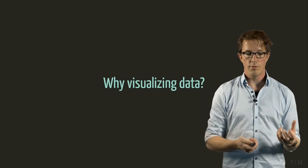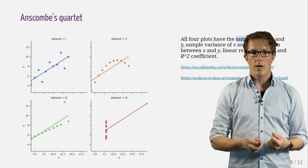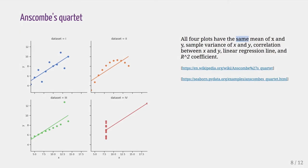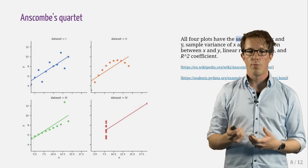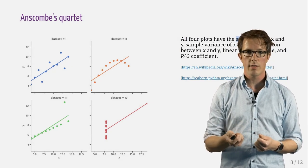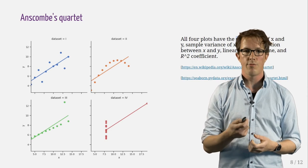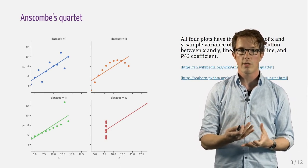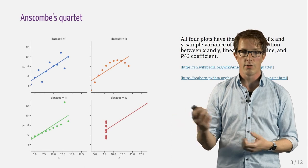So why do we visualize data? A classic example to motivate data visualization is Anscombe's Quartet — four datasets which look distinctively differently, as you can see in the left panel. But all four plots have the same statistics: the same mean of X and Y, same variance of X and Y, same correlation between X and Y, and the same linear regression.